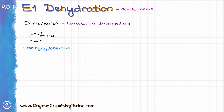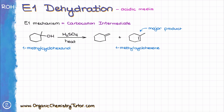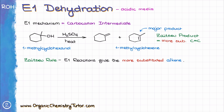For instance, if we take 1-methylcyclohexanol and heat that with sulfuric acid, we are going to get two isomeric alkene products. The more substituted one, 1-methylcyclohexene, is going to be the major product here. We sometimes refer to the formation of the more substituted alkene in E1 reactions as the Zaitsev product. Likewise, the tendency of E1 reactions to form the more substituted alkene is often called the Zaitsev rule.